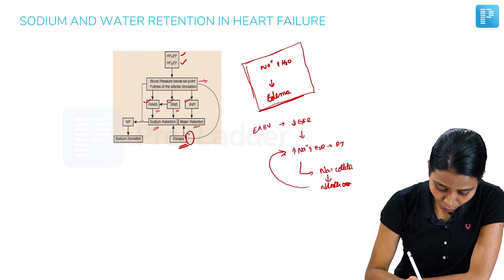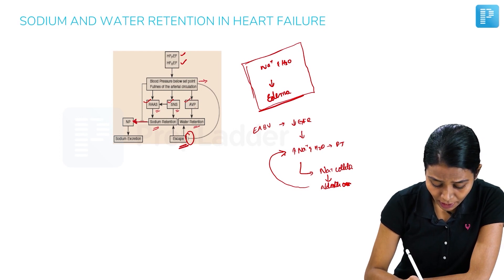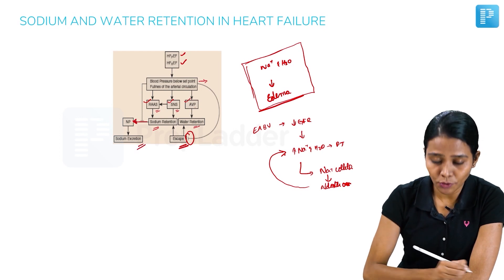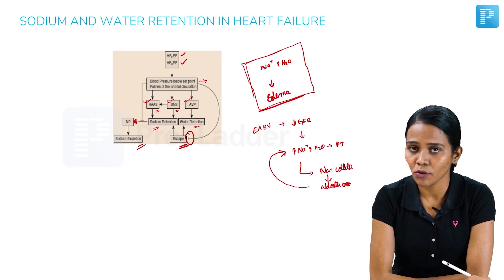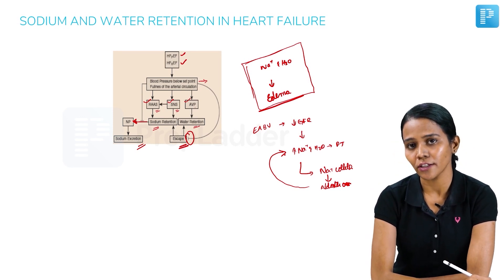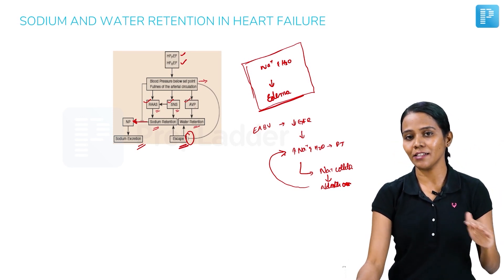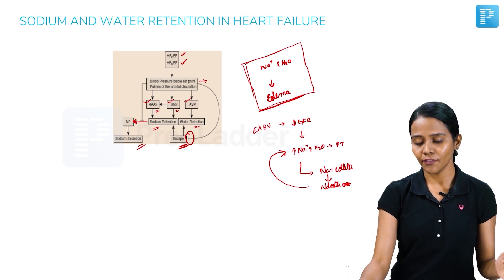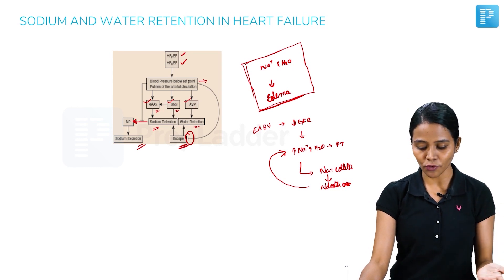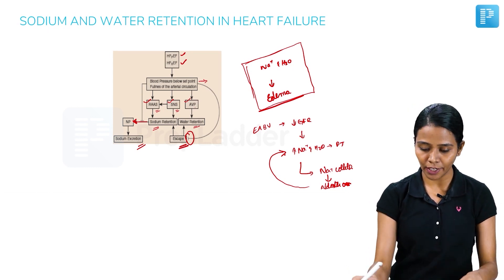The natriuretic peptide mechanism is also inhibited because of reduced arterial blood volume, so it does not act either. The defense mechanisms are thus broken in heart failure, and because of this, water accumulates leading to edema.